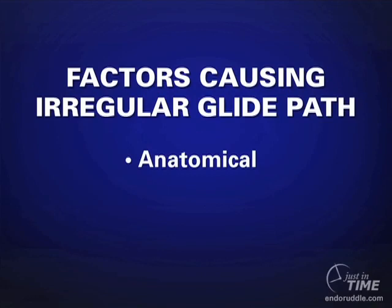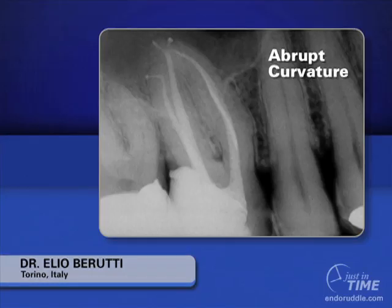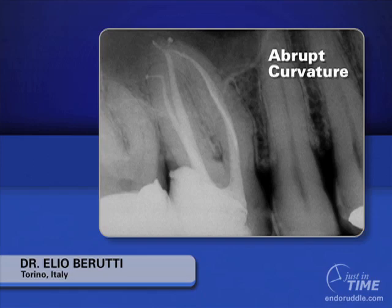The first factor is anatomical. We can all imagine in our minds the anatomy - cases we've treated where there was a sharp dilaceration, like in this distal buccal root treated brilliantly by my friend Elio Baruti. Trying to rotate an instrument around a 90-degree curvature is fraught with problems. If you think logically of a speed of 300 RPMs and the compressive and tensile stresses on the file in the curvature, it would be very likely that we would separate an instrument around that curve.